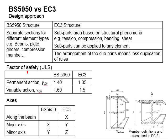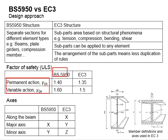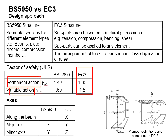Next, in terms of the factor of safety for the ultimate limit state, British Standards use factors of safety for loads of 1.4 and 1.6 for permanent and variable actions. British Standards define permanent and variable actions as dead load and imposed load, while Eurocode 3 defines them as permanent and variable actions with factors of safety of 1.35 and 1.5.